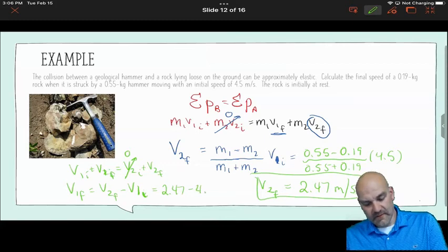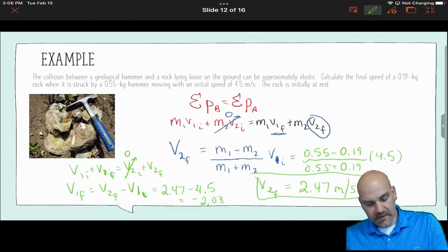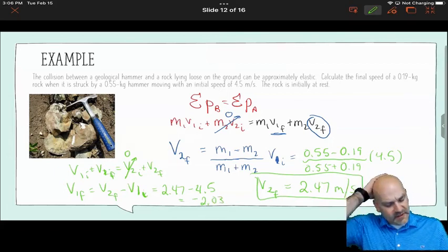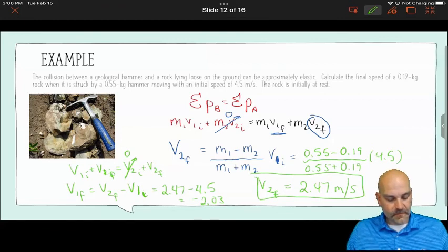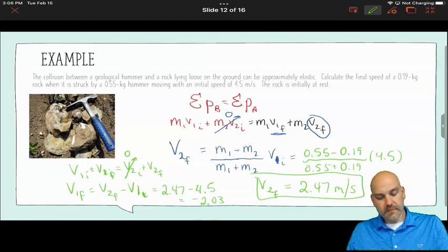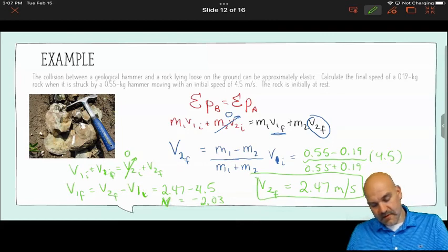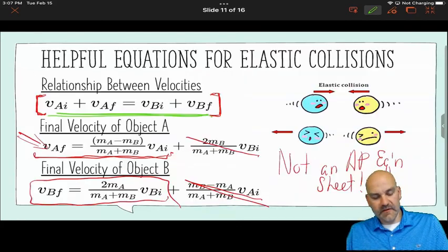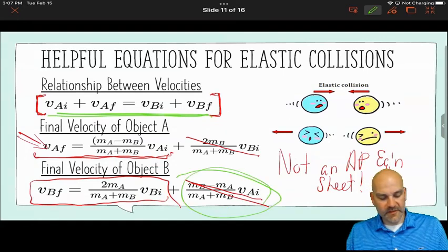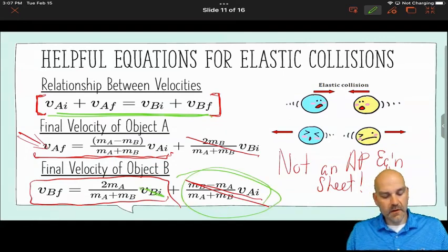And so I would have 2.47 minus 4.5, and I end up with negative 2.03, which really doesn't make sense because it should be a positive because, oh, same direction, same direction. Okay? V1 final. Okay? You can also plug it into this equation because, remember, our second object's not moving.